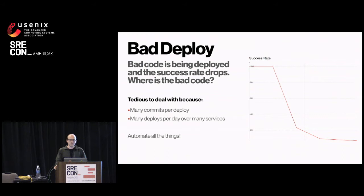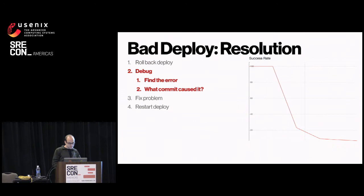So let's see what we can automate to make this not as bad for everybody. The basic resolution, as I'm sure you all do, is when there's a bad deploy, you roll back the deploy, you debug it. You find the error, find out what commit caused the error, often fix it by reverting or rolling forward, restart, deploy, and move on with your day.